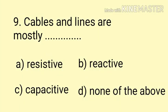Question number 9. Cables and lines are mostly dash. Option A: resistive. Option B: reactive. Option C: capacitive. Option D: none of the above. Cables and lines are mostly resistive. Here the correct answer is Option A.